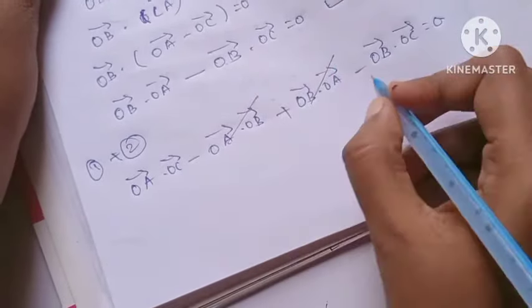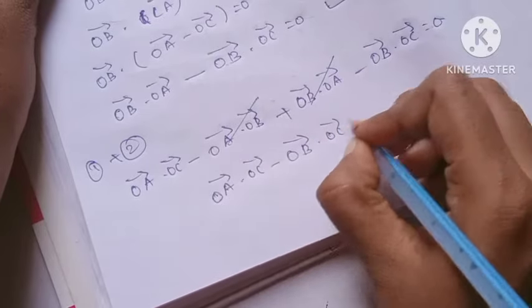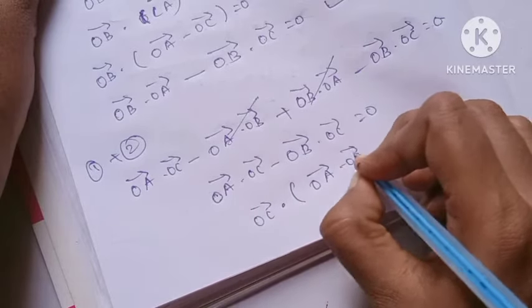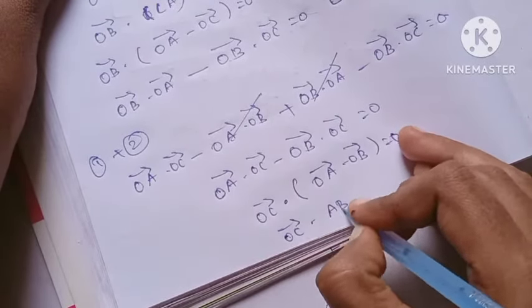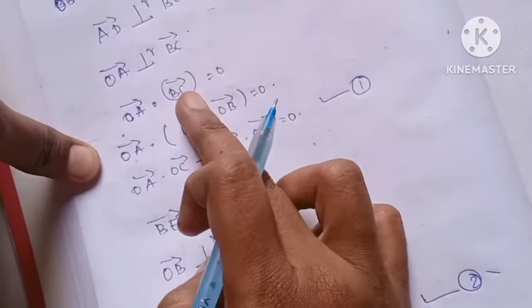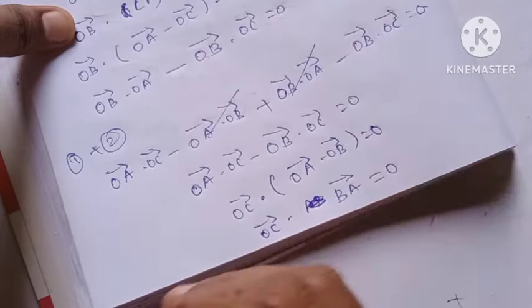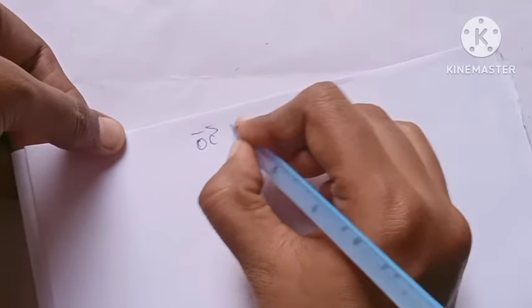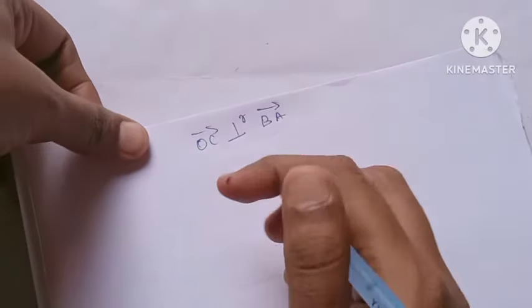Now if you look at this, terms cancel. We get OA dot OC minus OB dot OC. This is OC dot (OA minus OB) equals zero. OA minus OB equals AB vector, so OC dot AB equals zero.